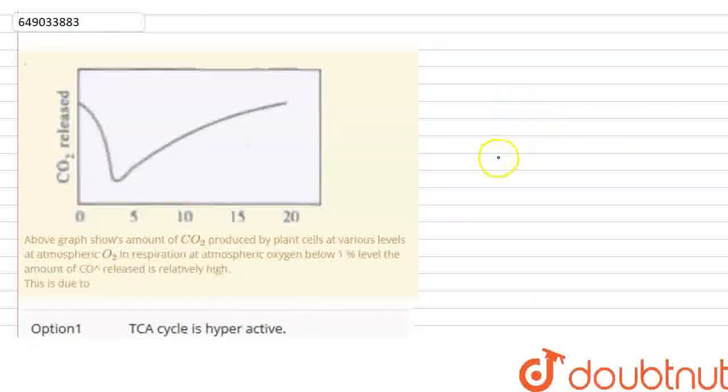The above graph shows the amount of carbon dioxide produced by plant cells at various levels of atmospheric oxygen. In respiration, at atmospheric oxygen below 1% level, the amount of carbon dioxide released is relatively high. This is due to... Here we have been told that as atmospheric oxygen is reduced, the amount of carbon dioxide released increases. We are asked why this happened.